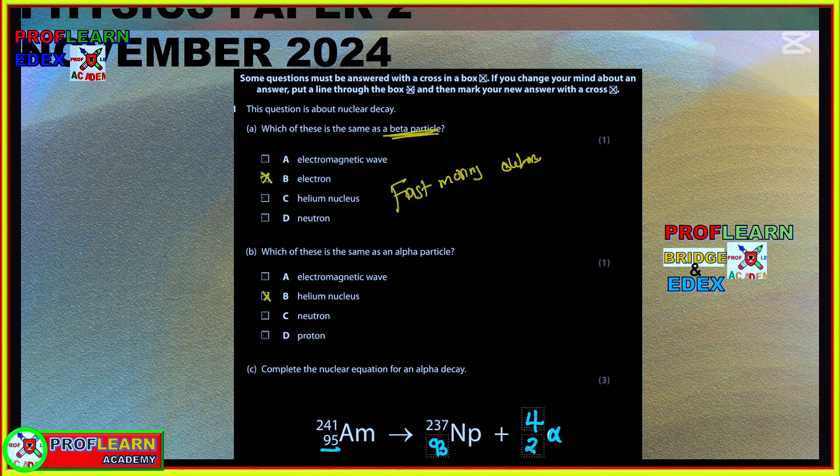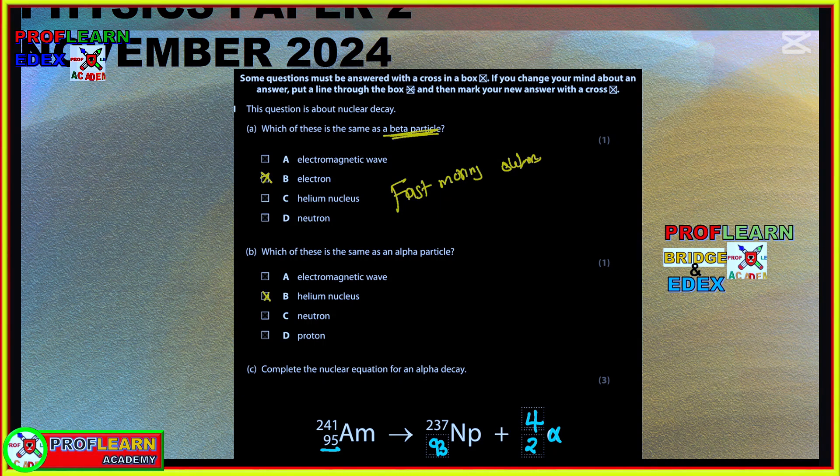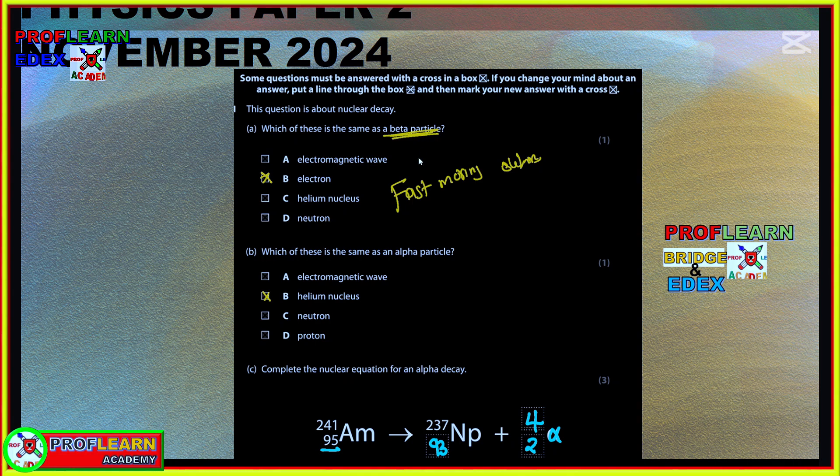The students were greeted with the topic of radioactivity. Most students smiled when they saw these questions because they were straightforward. The first question asks which of this is the same as beta particles? Remember beta particles are fast moving electrons. Which of this is the same as alpha particles? Alpha particles are represented by the helium nucleus. Complete the nuclear equation. What you want to remember is that what's on the left hand side should balance with what's on the right. Since alpha is helium which is 4, 2, and we have 2 here, this has to be 93 so that 93 plus 2 will be 95.